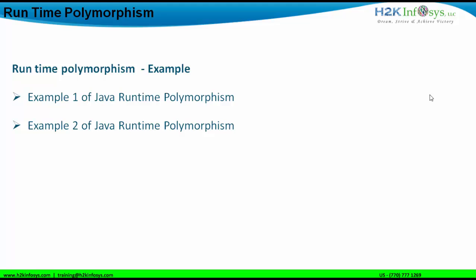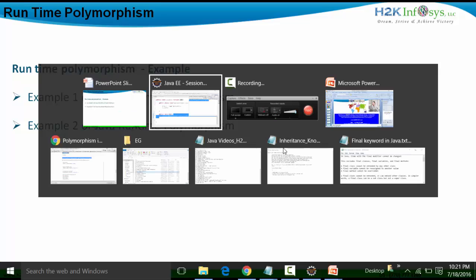The rule must be followed by SBI, ICICI, and ANZ. Each can fix its own interest rate but cannot exceed the maximum set by the central bank. For example, SBI sets its interest rate at 8%, ICICI sets it at 9%, and ANZ sets it at 10%. This understanding forms the basis of example 2 of Java Runtime Polymorphism, which I will now show in Eclipse.